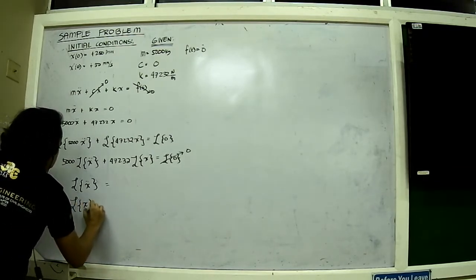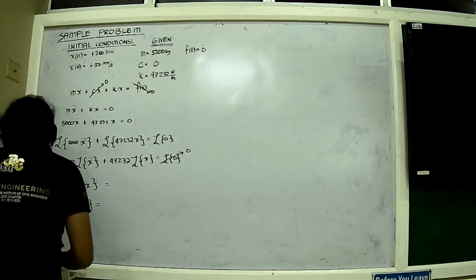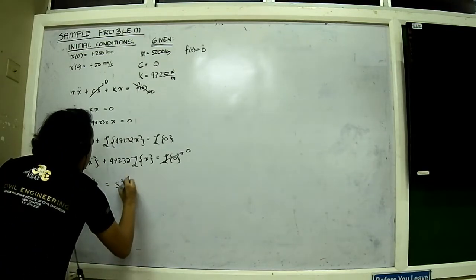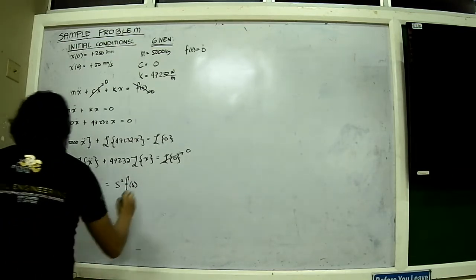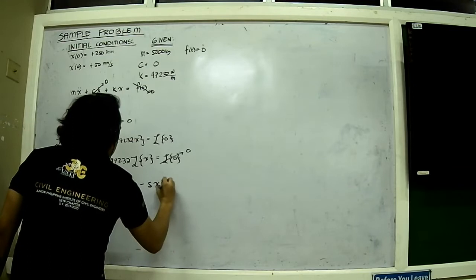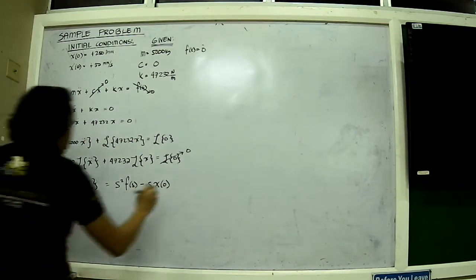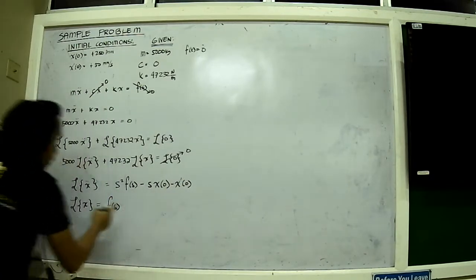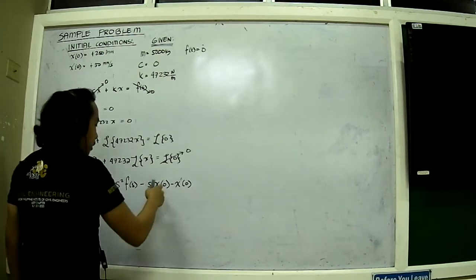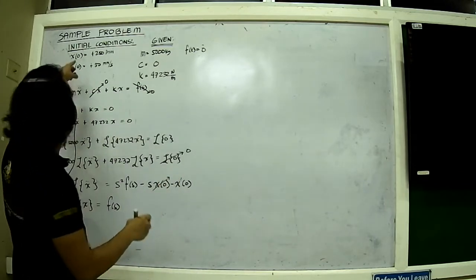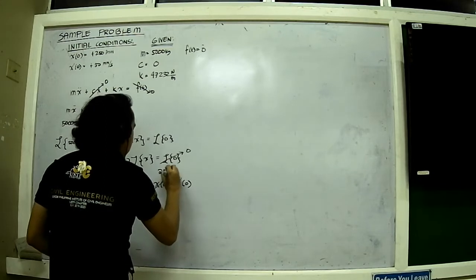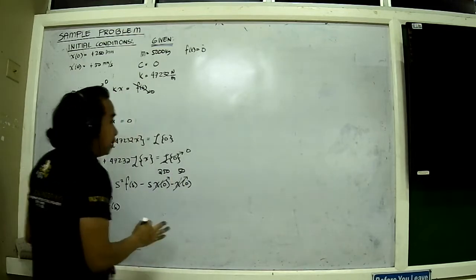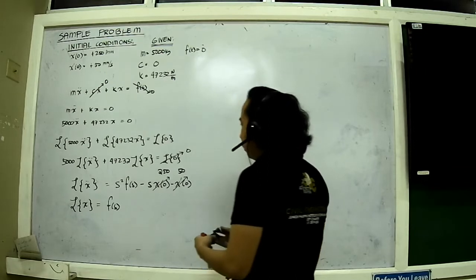But first I need to define the Laplace transform of the second derivative before we re-manipulate this. You have to keep in mind that the Laplace of x-double-prime is equal to s²F(s) minus s·x(0) minus x'(0). This initial condition gives us x(0) = 250 and x'(0) = 50.